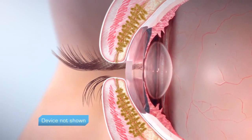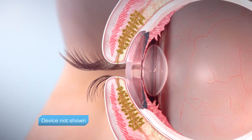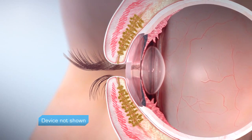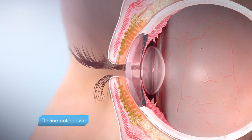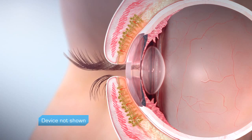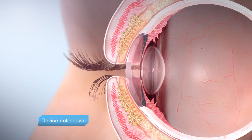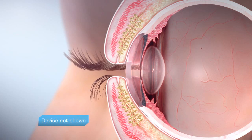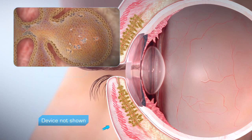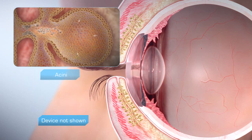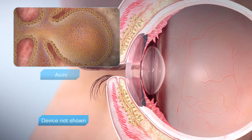The LipiFlow system uses heat and pressure to clear blocked meibomian glands. By applying heat directly to the glands on the inner eyelid surface, heat rapidly and efficiently raises gland contents, liquefying any blockage, making it easier to remove from the gland. Gentle pressure is applied from outside the lid from the base of the gland to the gland opening, removing blockage and flushing dead cells from the gland. During this process, stagnant gland tissue may be removed from the glands.